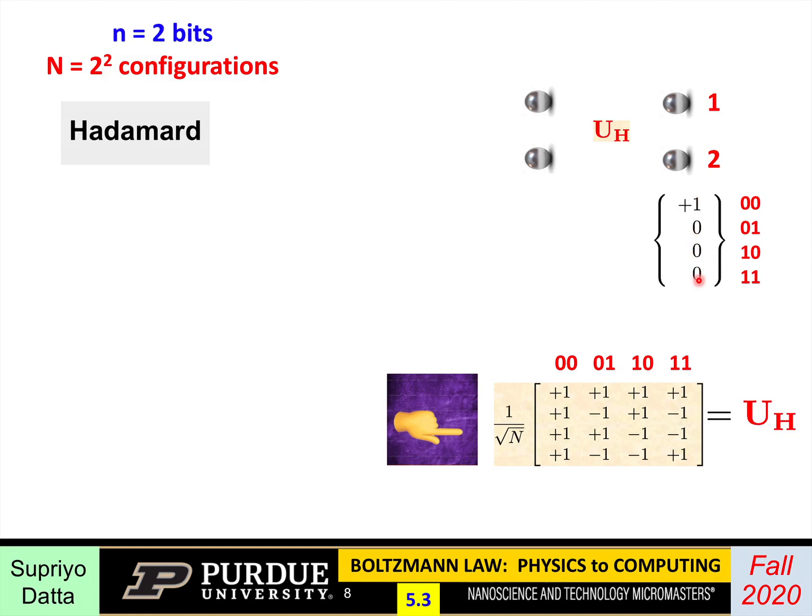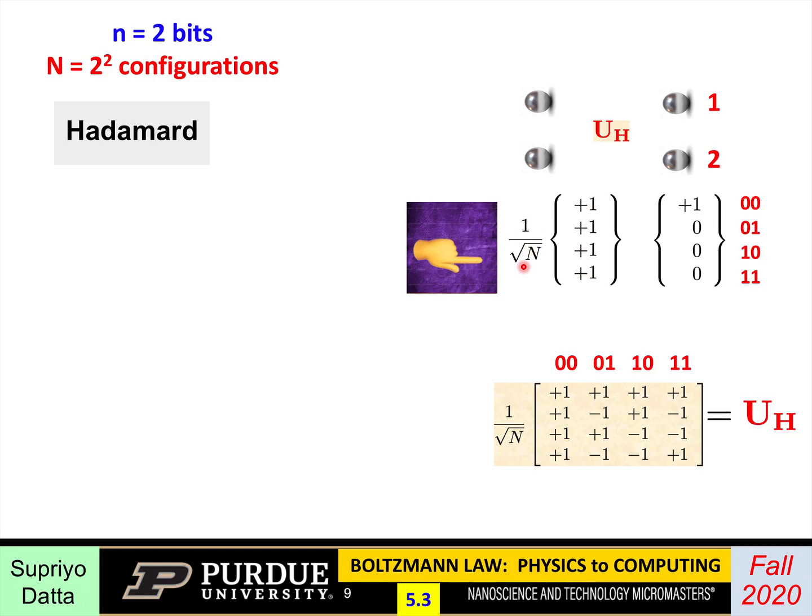If you come in with 0,0, so the initial wave function looks like +1, 0, 0, 0, then after applying the Hadamard gate, you get this first column. What you'd get then would look like 1, 1, 1, 1, times 1 over square root of N. In this case that would be 1 over square root of 4, which is half. But to keep it general, I'm writing 1 over square root of N.